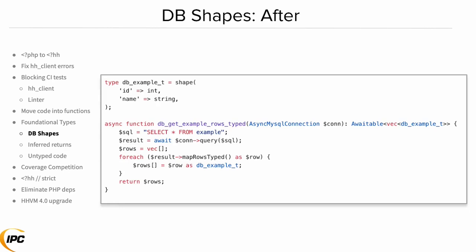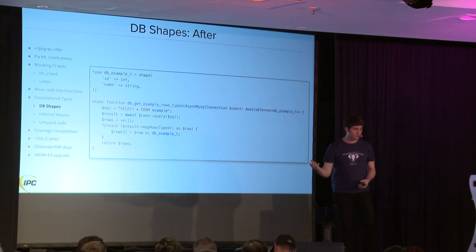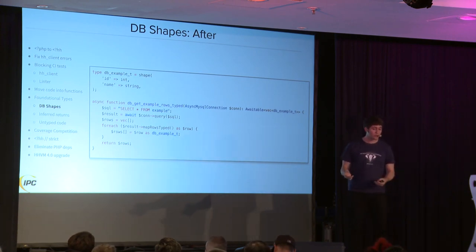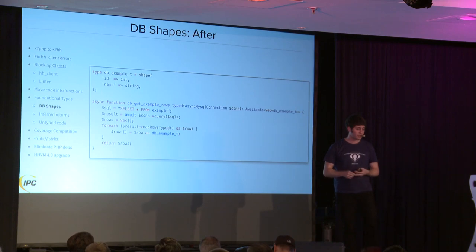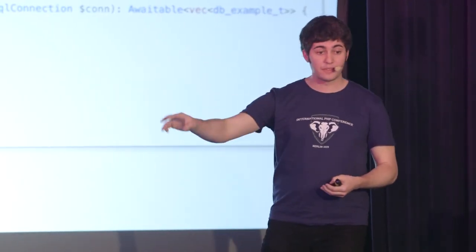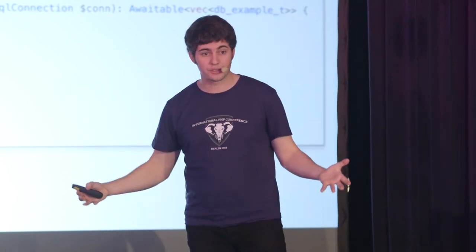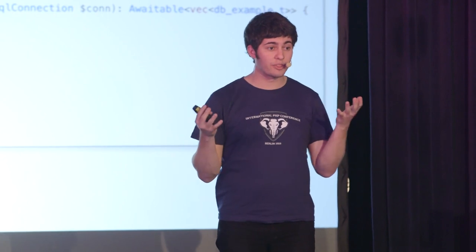We migrated to the async MySQL client to get typed data. This code example uses async/await, but the important thing is the map_rows_typed function where the data we get back is typed. We're then able to assert that the typed row matches a shape we have defined. We wrote code that parses the SQL CREATE TABLE statement and generated a shape for every database table we had — basically every MySQL column is either going to be an int or a string in Hack anyway. Now we have data types for all our database tables — a place to start bringing types in throughout the rest of the application.